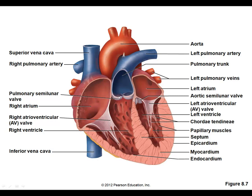The other two valves are at the entrance of the major arteries. At the entrance of the pulmonary artery is the pulmonary semilunar valve, and at the entrance of the aorta is the aortic valve. Semilunar valves are shaped like half-moons or pockets — different from the flap-like cuspid valves. Blood flows from the right atrium to the right ventricle, to the pulmonary artery, to the lungs, back via the pulmonary veins to the left atrium, then to the left ventricle, through the aorta, and into systemic circulation.